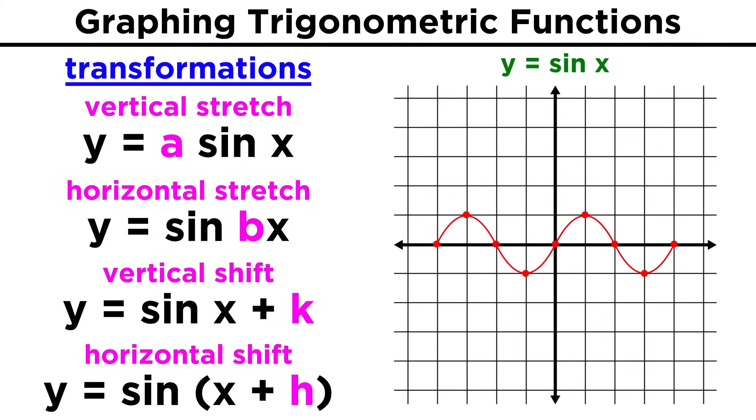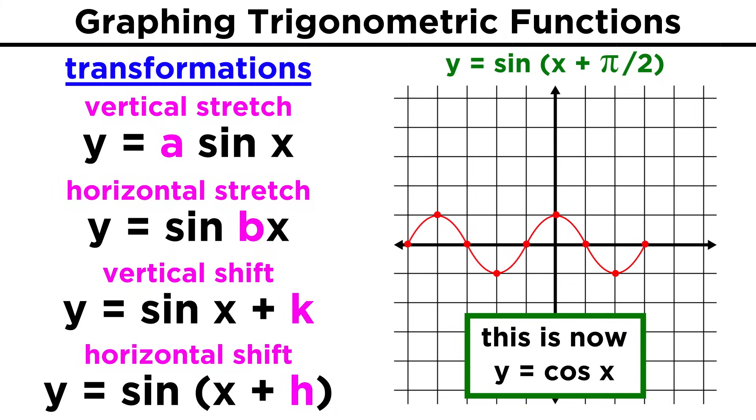If instead we have some number inside the function, like y equals sine of the quantity x plus half pi, this whole thing will shift half pi to the left. As it happens, we have just generated the graph for y equals cosine x.